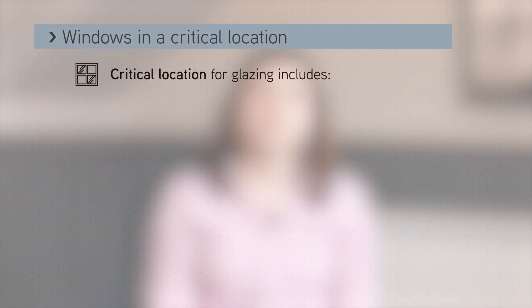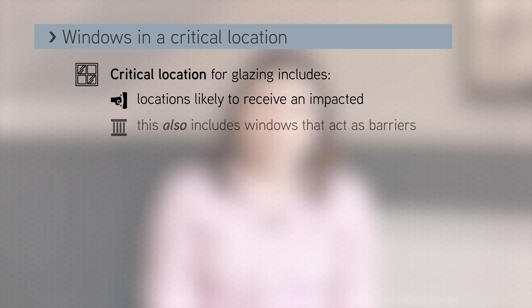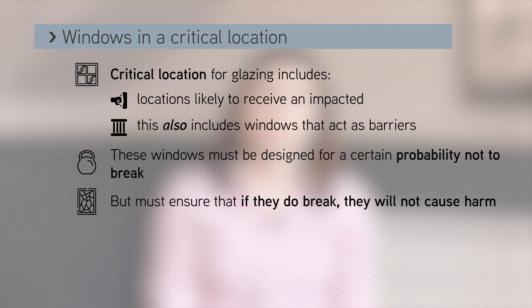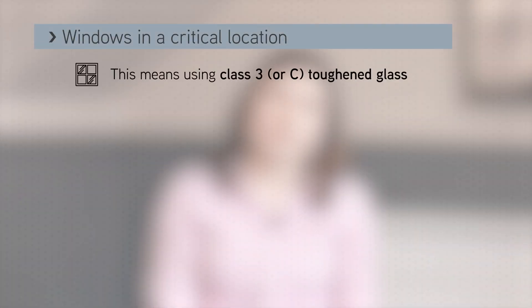If so, you need to design for a certain probability that a window won't break, but also ensure that if it does break, it breaks in a way that won't cut people. This means that only some types of glass are suitable — it usually has to be Class 3 or C, which is the same thing, also called toughened glass.